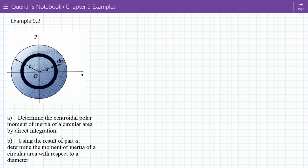Okay, let's look at example 9.2. In example 9.2, we have a circular washer, a disk.